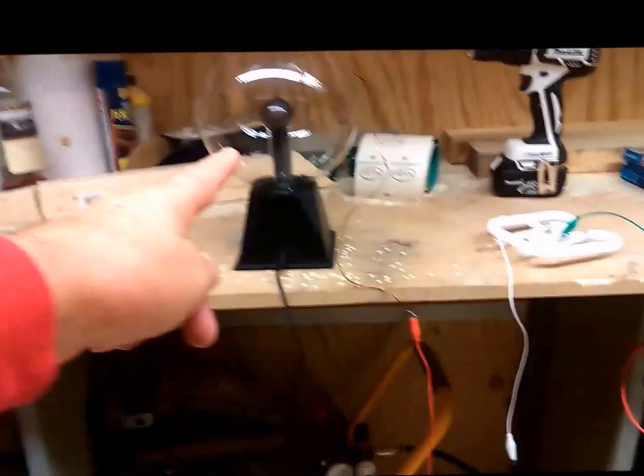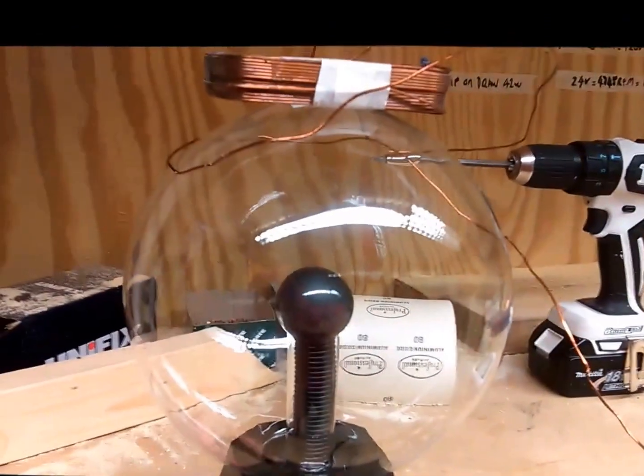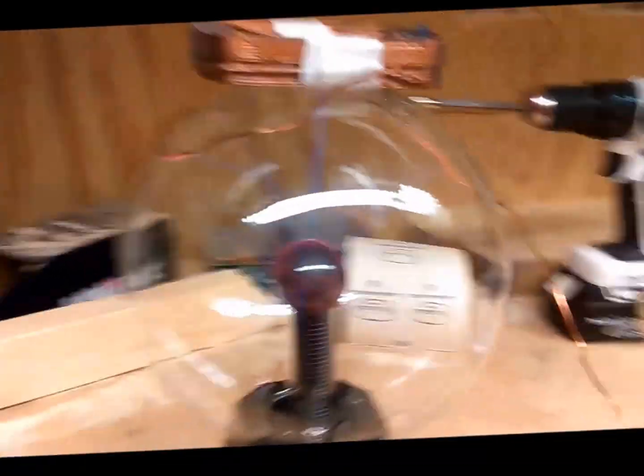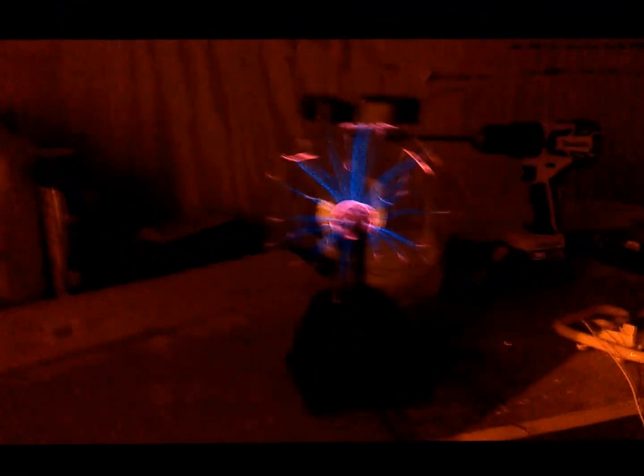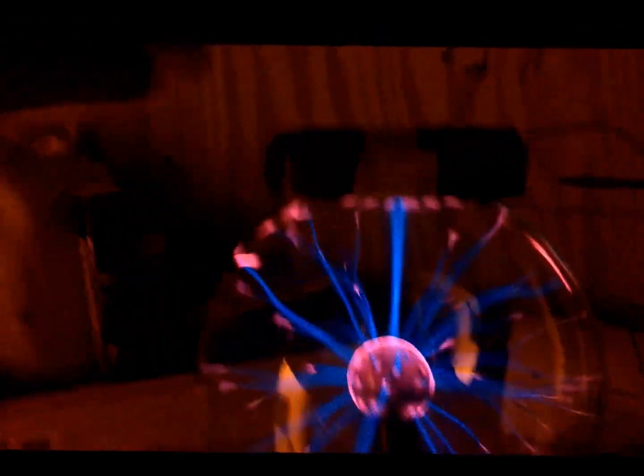Right, so we've got the globe on the bench, it's connected to the power supply which I'll switch on now. Power supply on. Turn the light out and as you can see everything's working here. We've got the coils on the top and the plasma lamp working.